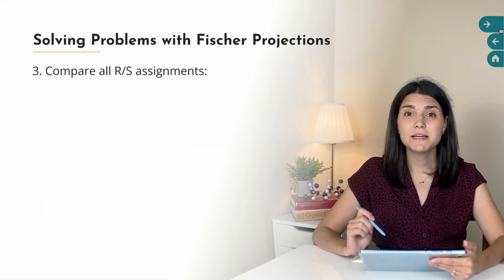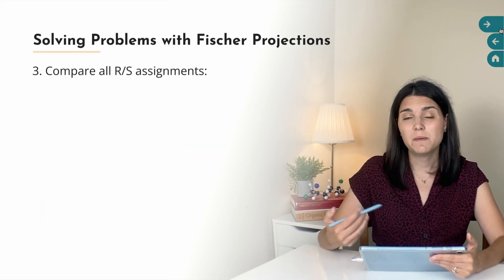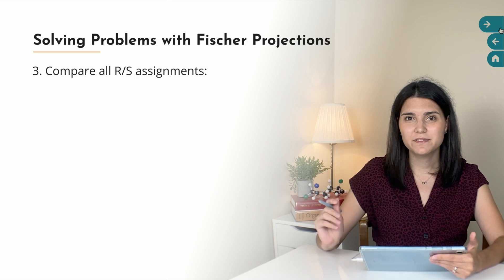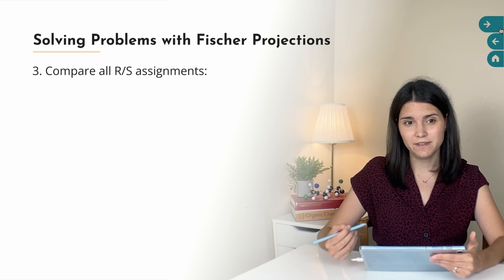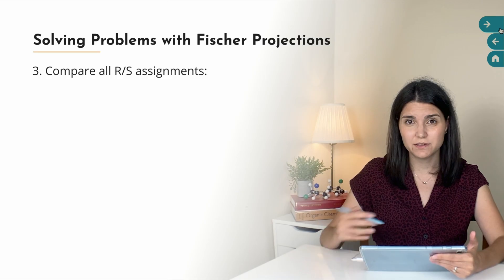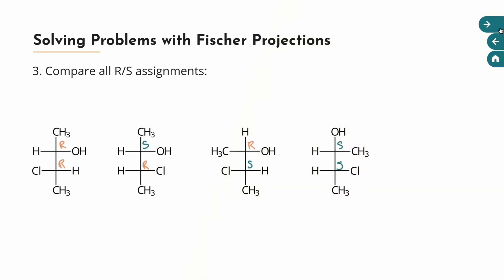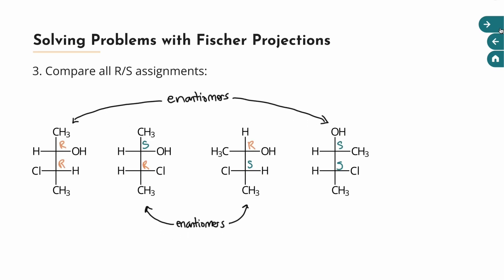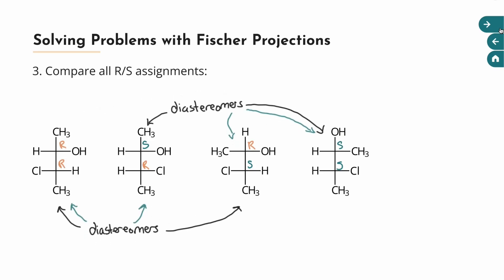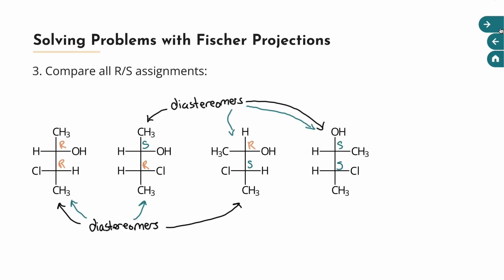My last tip, especially useful when you have more than two Fischer projections to compare, is to simply assign all of the R and S configurations to the chirality centers in all of your Fischer projections. If I did that with this group of four molecules, I would get RR, SR, RS, and SS. With all configurations assigned, you can clearly see the enantiomer relationships as well as the diastereomer relationships among the group of compounds.